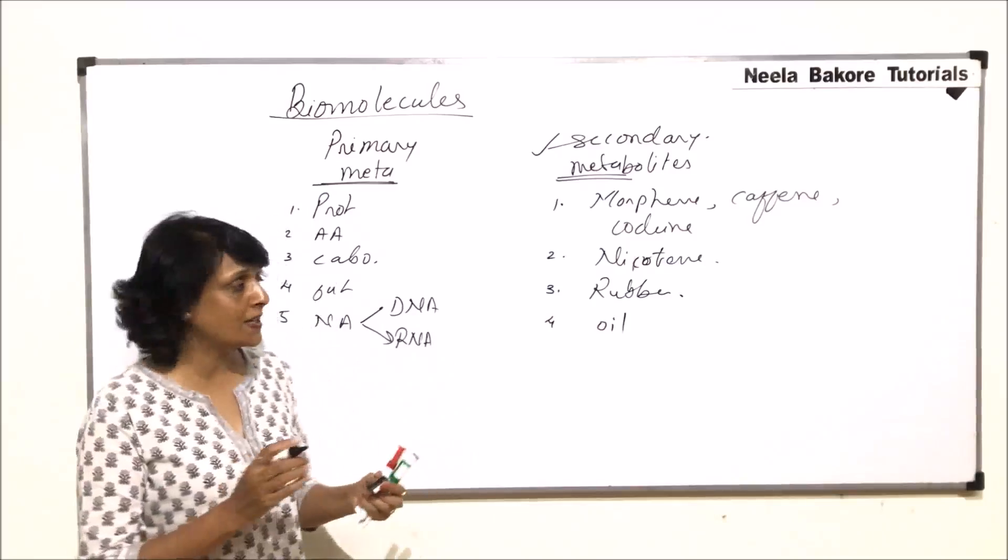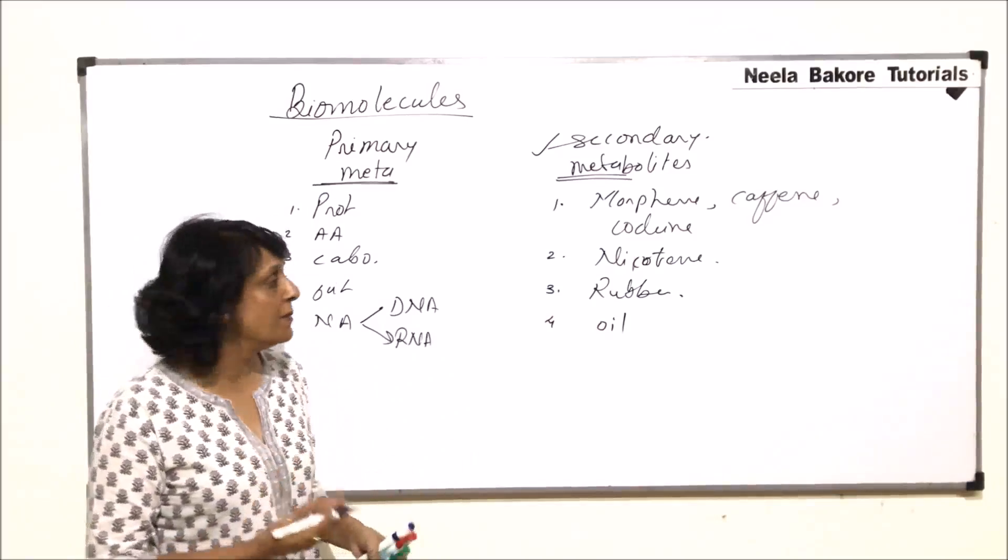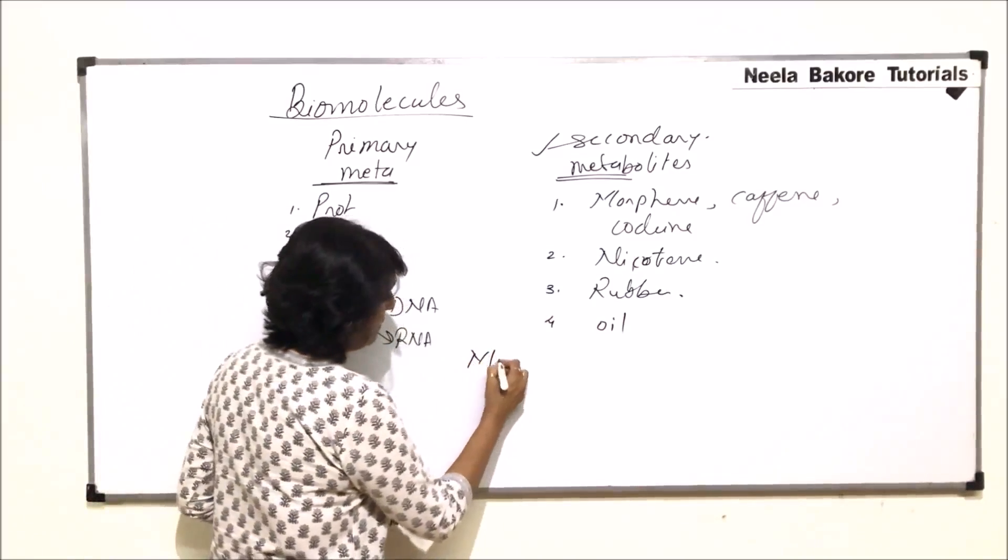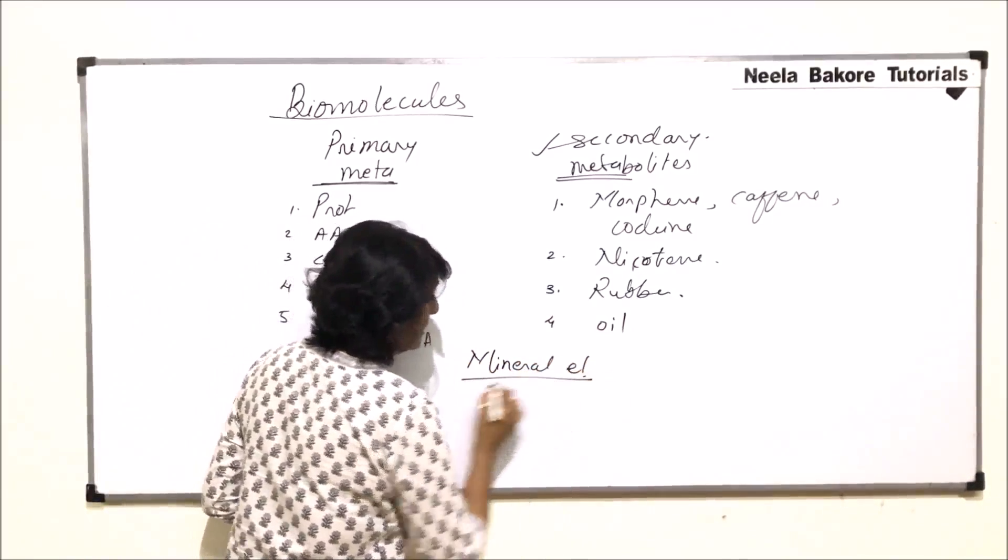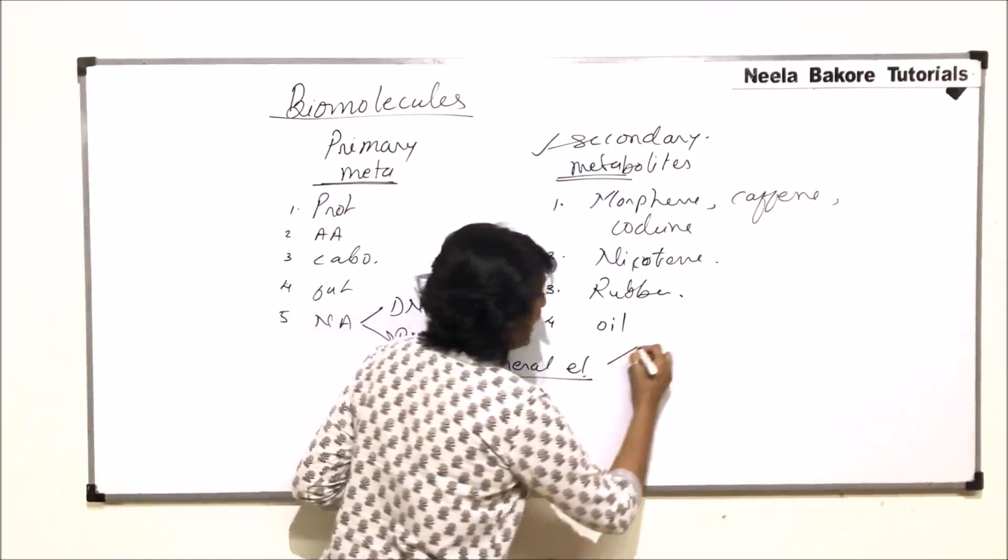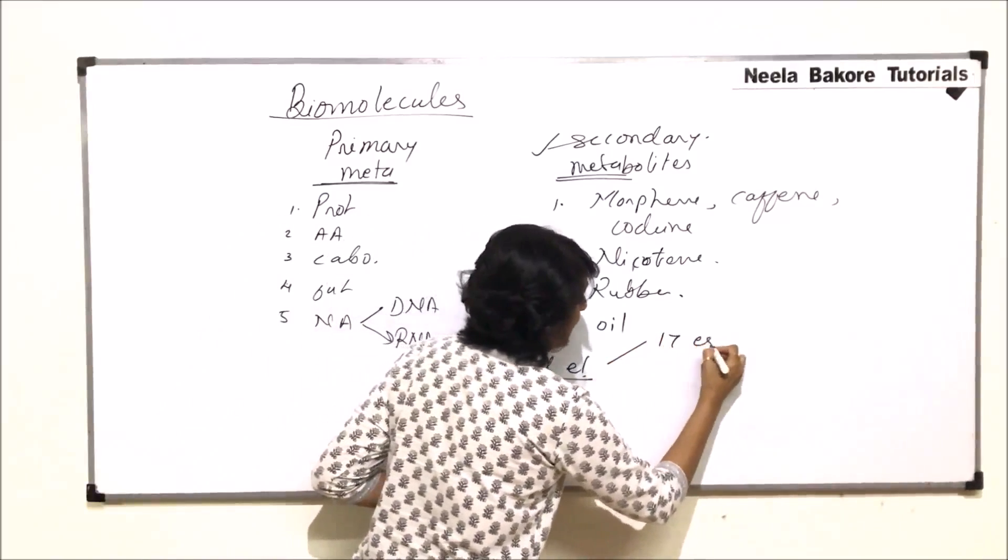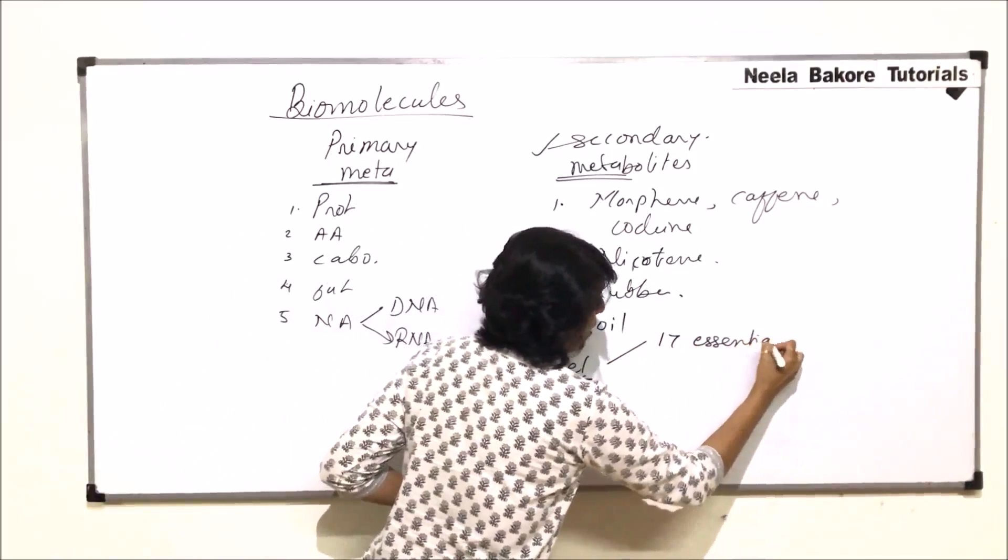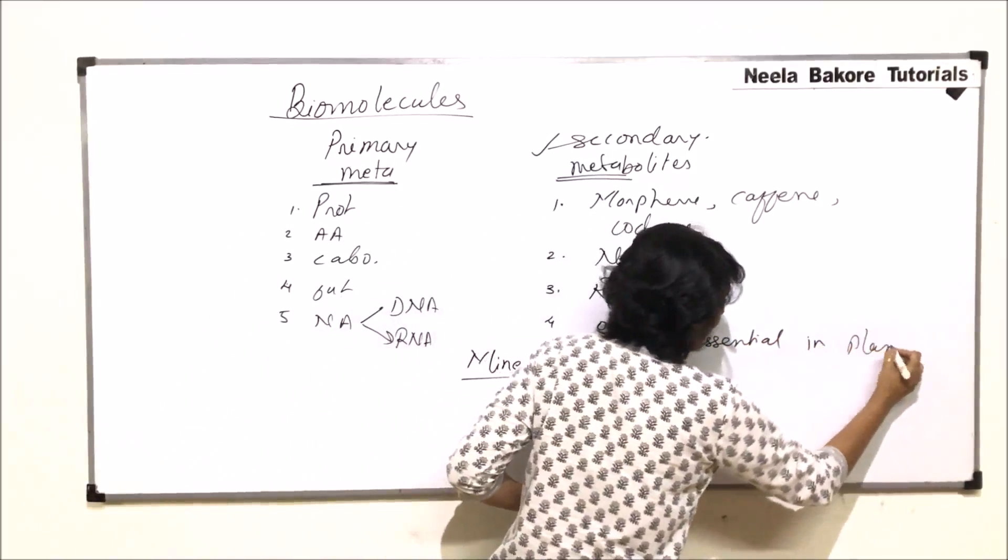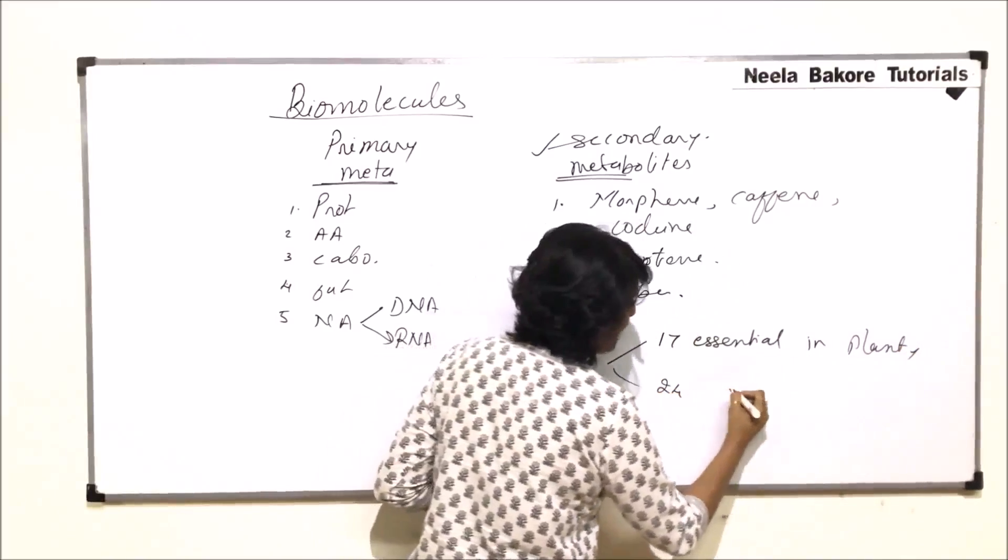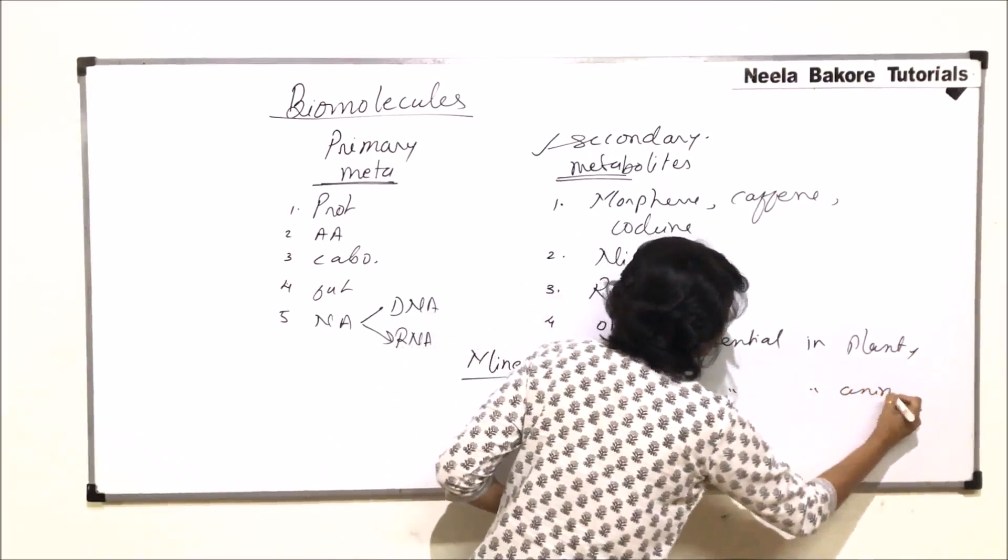Now we will discuss few important elements, the mineral elements. When we talk of mineral elements, there are 17 essential elements for plants and 24 are essential in animals.